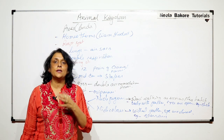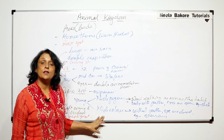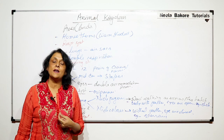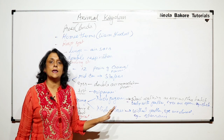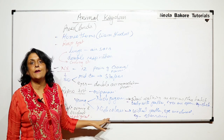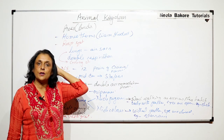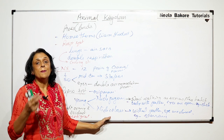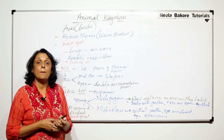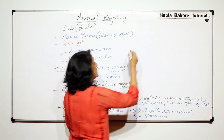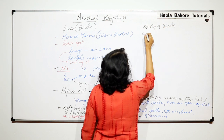The left ovary is normally the functional ovary producing eggs. If by chance it is damaged or becomes non-functional, only then will the right ovary become functional. But in normal cases, the right ovary and right oviduct remain vestigial and non-functional. This is an adaptation to reduce body weight. These are some special things about birds.